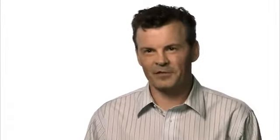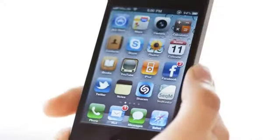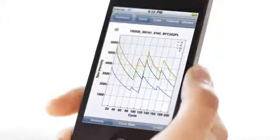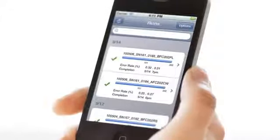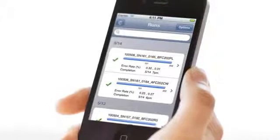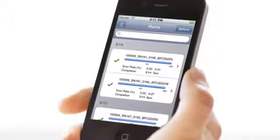After the first couple of runs, people won't want to be sitting in front of their instrument to see how things are going. Through SeqMonitor, you can assess performance of a run, see what your cluster densities are like, your estimated output, all the quality metrics that people would like to know about. You can assess that on any smartphone, iPad, or another computer—in another lab or down the road at Starbucks.